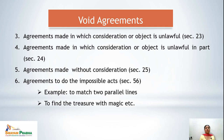Sixth is agreements to do the impossible act, covered under Section 56. If any agreement is made to perform something impossible, where there is zero possibility of performing that particular act, it is a void agreement. For example, to match two parallel lines — if there is an agreement that Mr. A will pay Rs. 1000 to Mr. B if Mr. B matches two parallel lines, this is a totally impossible act. Similarly, a promise to find treasure with magic. Such agreements where performance is totally impossible are void agreements.